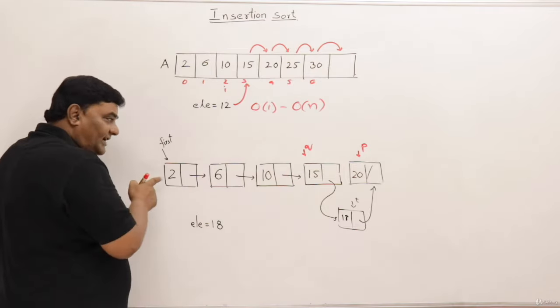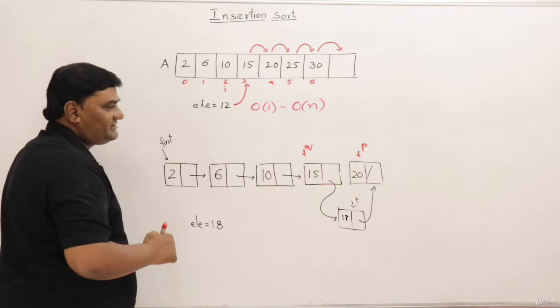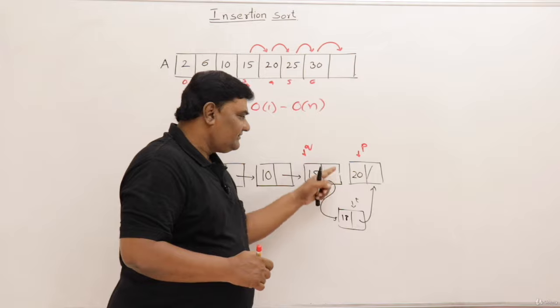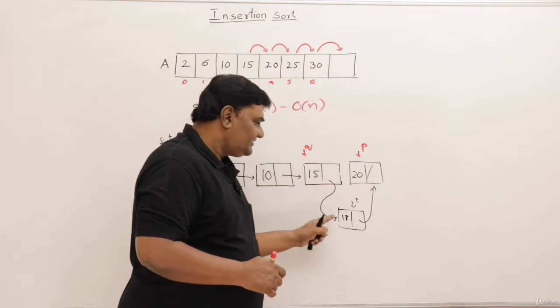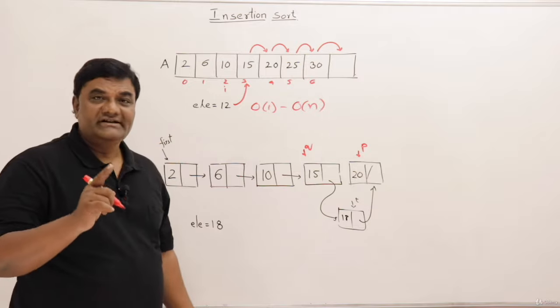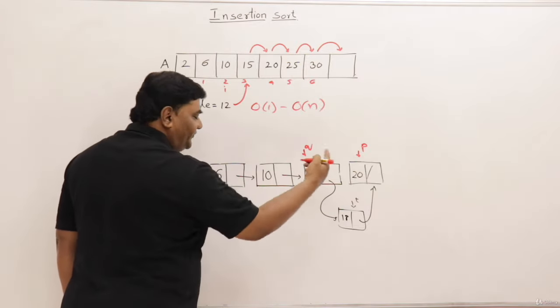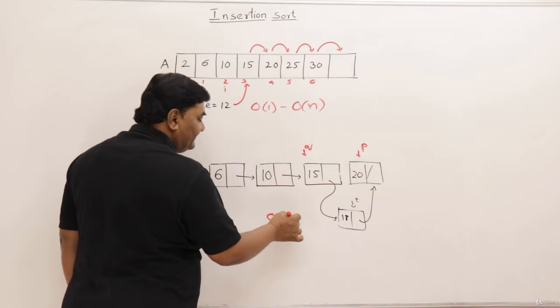Then here find out the position using P and Q. So traversing takes time. Insertion takes constant time. Just we have to create a node and make links. So searching for a position takes time. How much time it takes? It will traverse few elements. So let us say n.